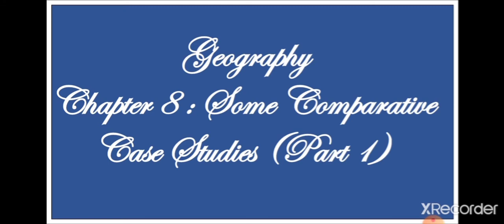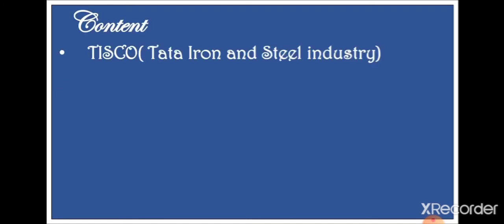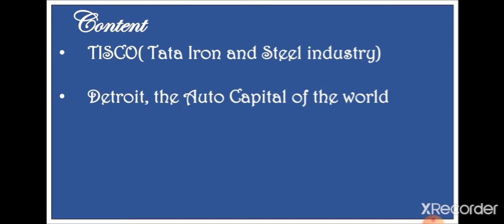In this chapter we are going to learn about four major industries of the world, and we will also learn what are the factors that encourage these industries or encourage the development of these industries in the world. In the first part I am going to provide you the explanation of TISCO — Tata Iron and Steel Industry — and Detroit, the auto capital of the world.